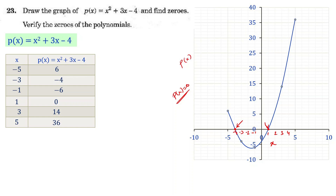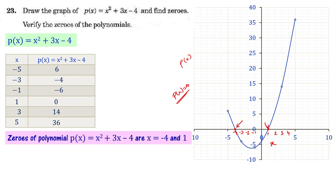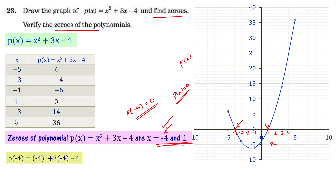So x = −4 and x = 1 are the zeros of the given quadratic polynomial. Next, to verify the zeros, substitute x = −4 and check whether the value of the polynomial comes out to be zero or not. Substituting x = −4: p(−4) = (−4)² + 3×(−4) − 4 = 16 − 12 − 4 = 0.